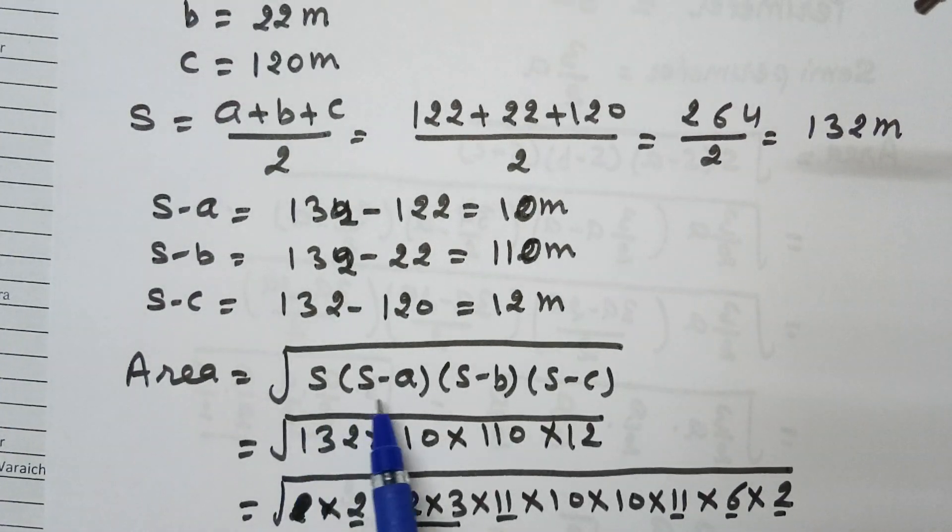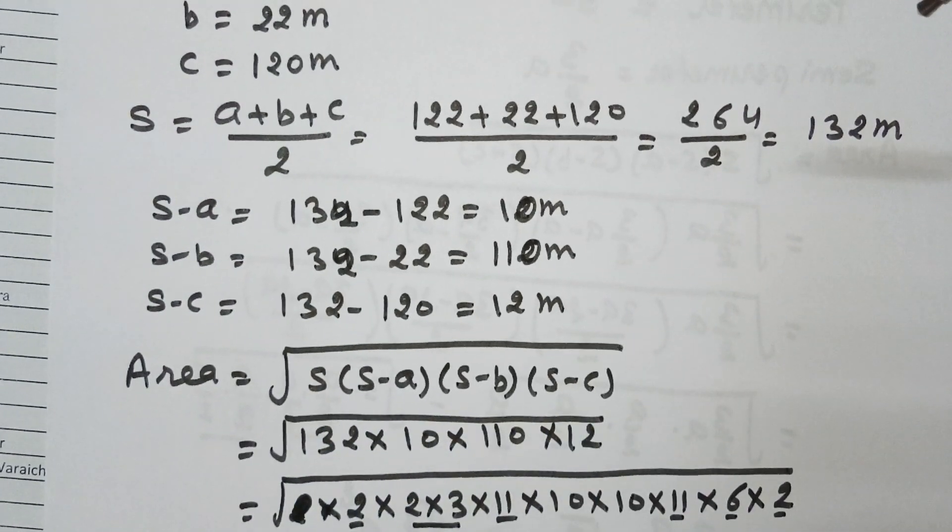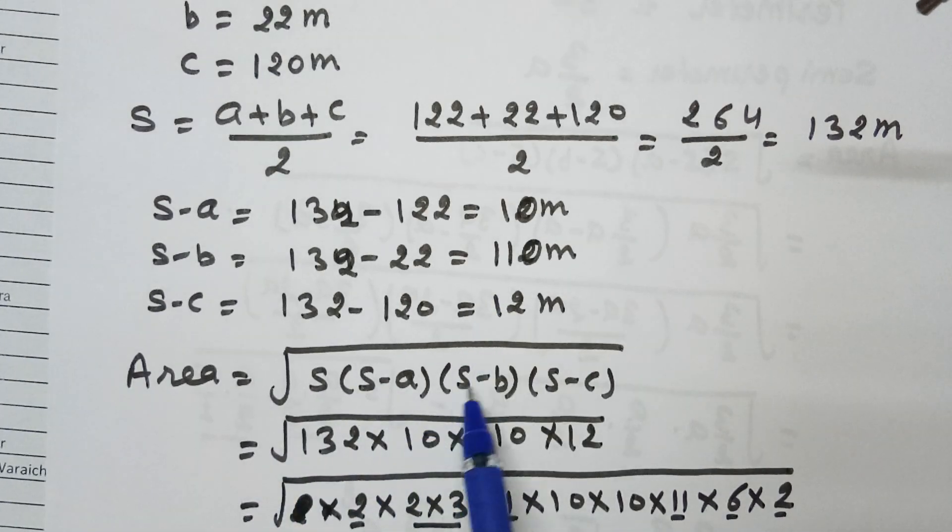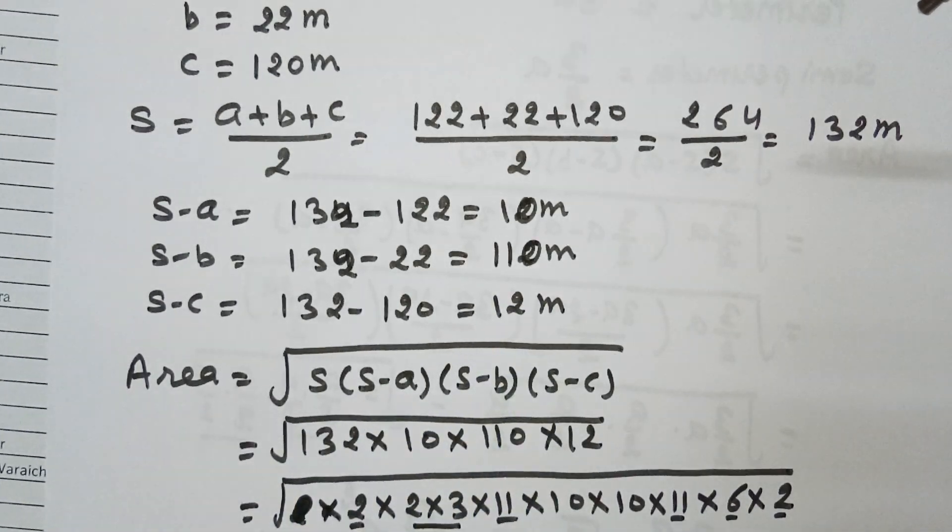To find the area by Heron's formula: Area = √(S × (S-a) × (S-b) × (S-c)). So Area = √(132 × 10 × 110 × 12).